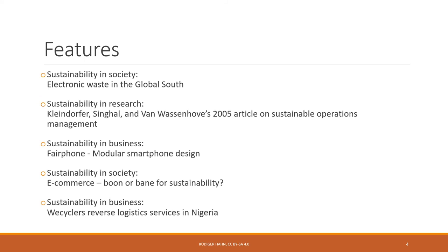As always, the chapter comes with a couple of features. The first is about electronic waste in the global south and the problems connected to e-waste — our feature on sustainability in society. Then we'll discuss the article by Kleindorfer, Singel, and von Wassenhofer from 2005 on sustainable operations management. In the business feature we'll look at the Fairphone, a modular smartphone design. Another society feature examines e-commerce: is it a boon or bane for sustainability? And finally, a business case from Nigeria — WeCyclerz — about reverse logistics services.